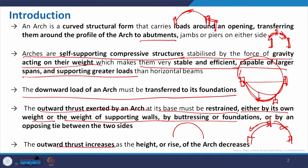The outward thrust increases as the height or rise of an arch decreases. The rise is basically this particular height — if it is a flat beam-column structure and you try to reduce the bend, the thrust will be more. If you make your arch parabolic, it will perform best; but if you flatten it progressively, the outward thrust increases compared to the height. That is why the thrust increases as the rise decreases.